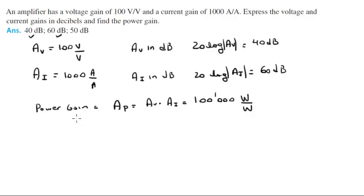Also, the power gain Ap in dB is given by 10 log of the absolute value of Ap, which comes out to be 50 decibels.